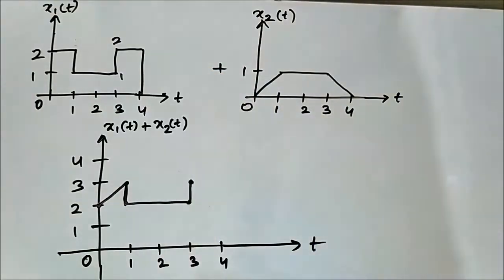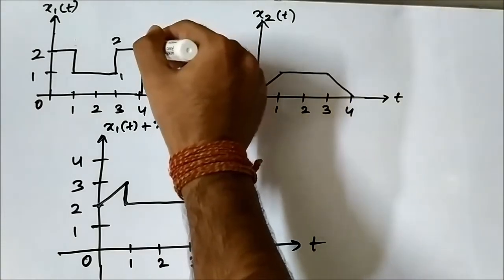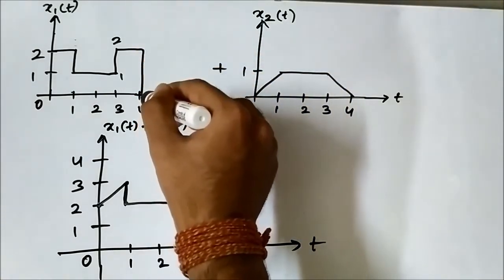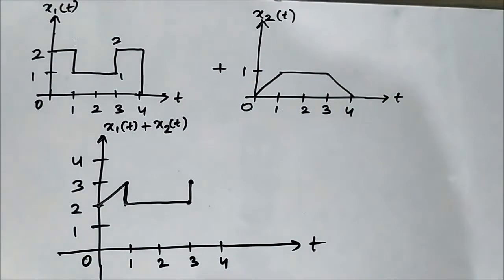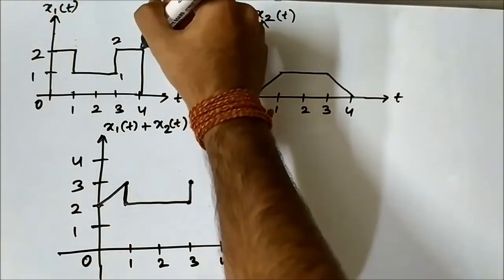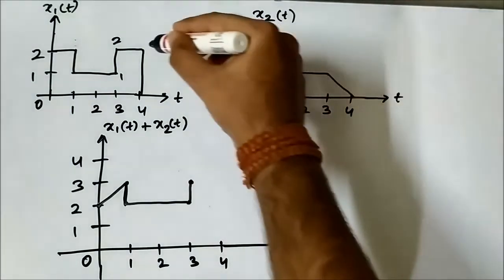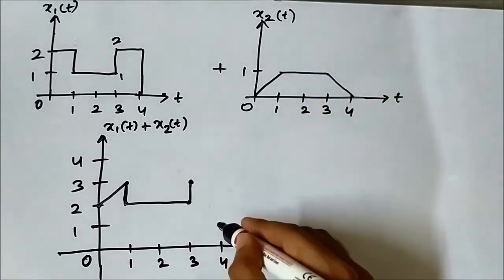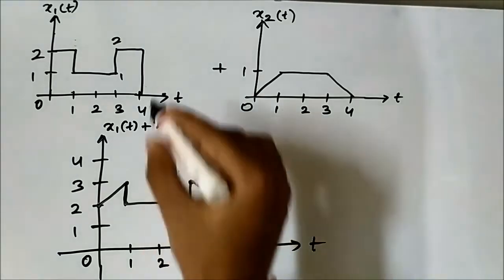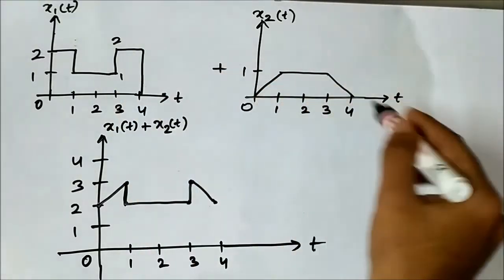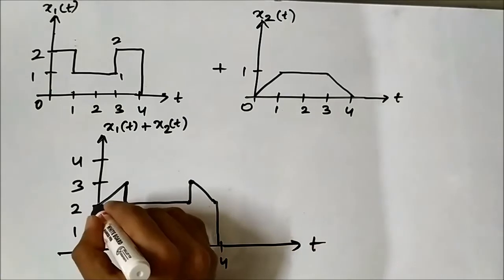At t equals 4, x1(t) has a value of 2 and then drops almost instantly to 0. x2(t) at t equals 4 is 0. So first we add 2 plus 0 which gives 2, and then the final value is 0 in both cases, giving 0 plus 0 equals 0. That defines the shape of x1(t) plus x2(t).